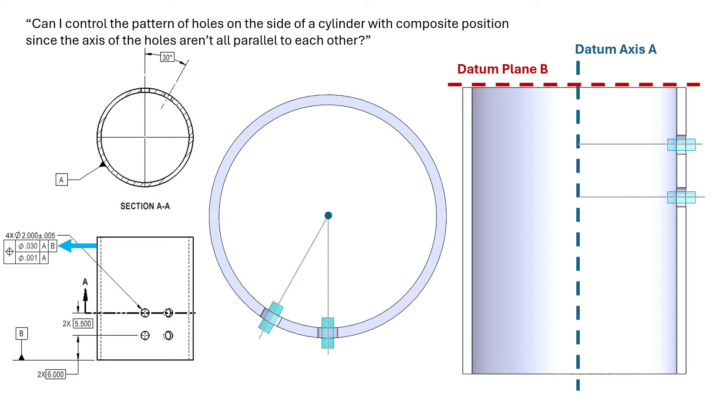At this simple example here, the question is can we control a pattern of four holes? These four holes, you can see from this image, they're coming in from the side of the cylinder. So the large cylinder, the outside diameter being datum feature A, these holes, all four of them as a pattern, come in from the side of the cylinder. As you can see here, they all kind of converge on the axis of that cylinder.